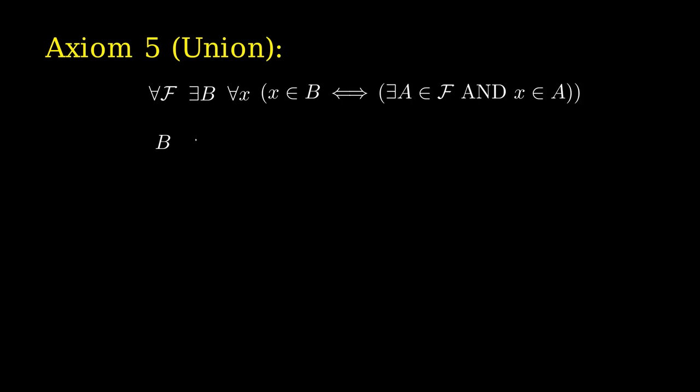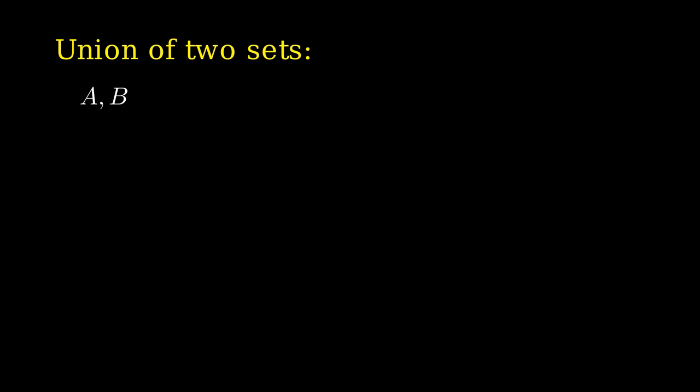We say that B is the union over F, or the union of all the A's in F. It is important to stress that we can create the union of as many sets as we want, but we need to know previously that all those sets belong to another set. Without this condition, you could create the union of all existing sets, which would lead us to Russell's contradiction. But we are allowed to create the union of any two sets A and B: use axiom 4 to create the pairing {A, B}, then use axiom 5 to create the union over that pairing.